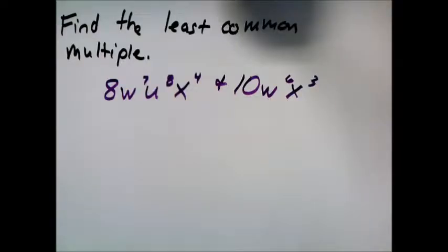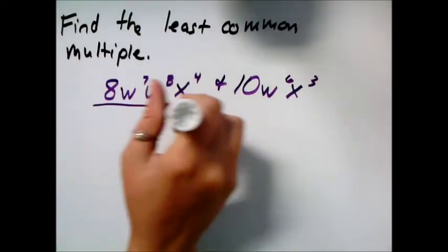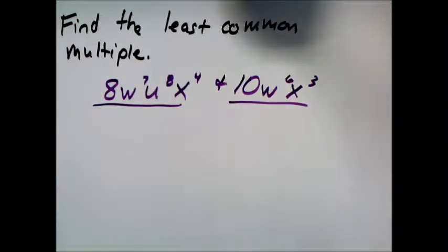Here we're going to look at finding the least common multiple of two expressions. So this one and this one, or these two terms. Think of least common multiple for numbers. I need a number that 8 and 10 both go into.